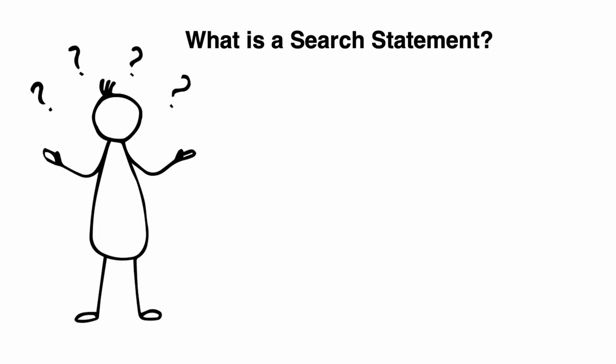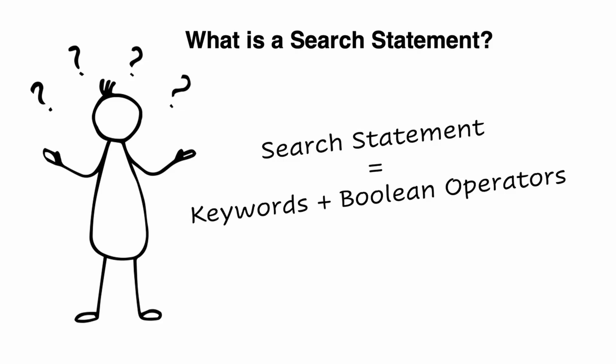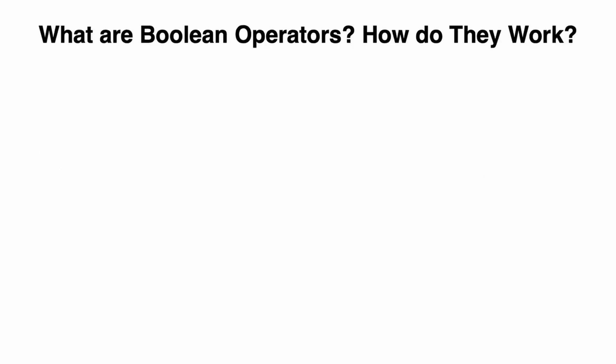Now that we have a good handle on our keywords, we need to create our search statement. But what is a search statement? Searching databases is all about combining keywords in a way that the database can understand and that will retrieve the most relevant results. This combination of keywords is called a search statement. Most databases use Boolean operators to combine keywords, so we need to use Boolean operators in our pre-planning by writing them into our search statements. Boolean operators link keywords together to either narrow or broaden your set of results.